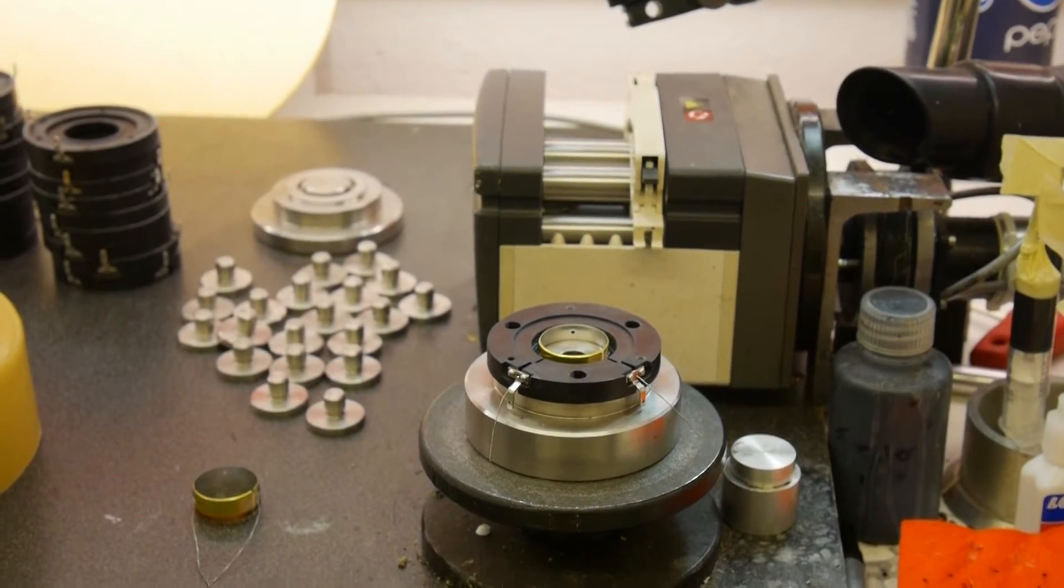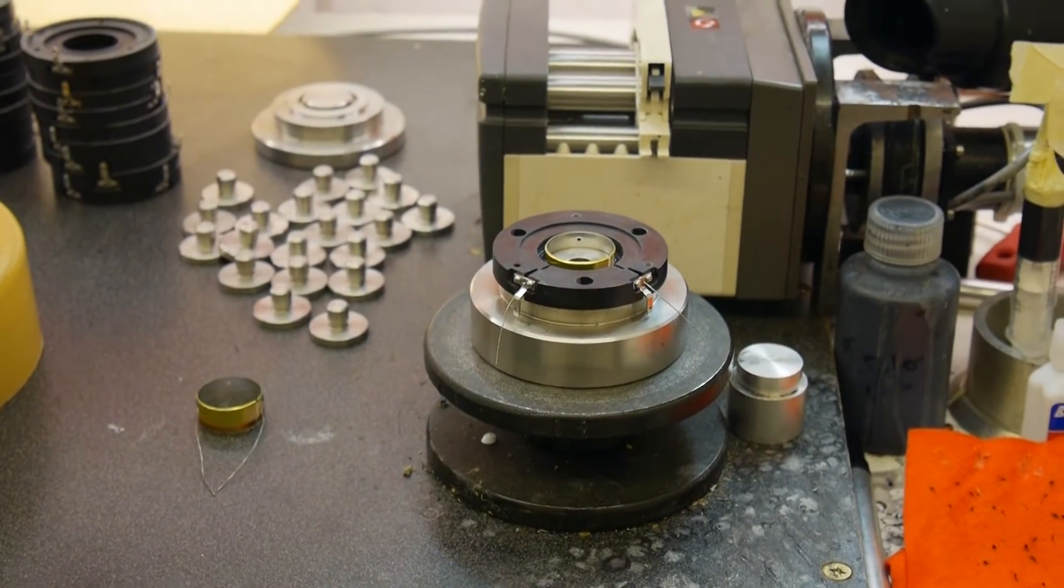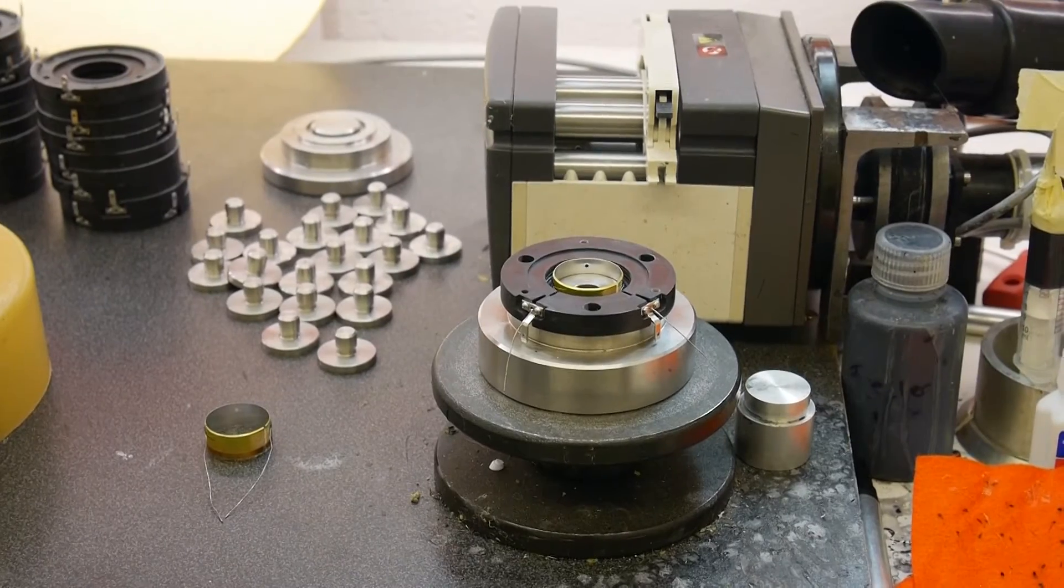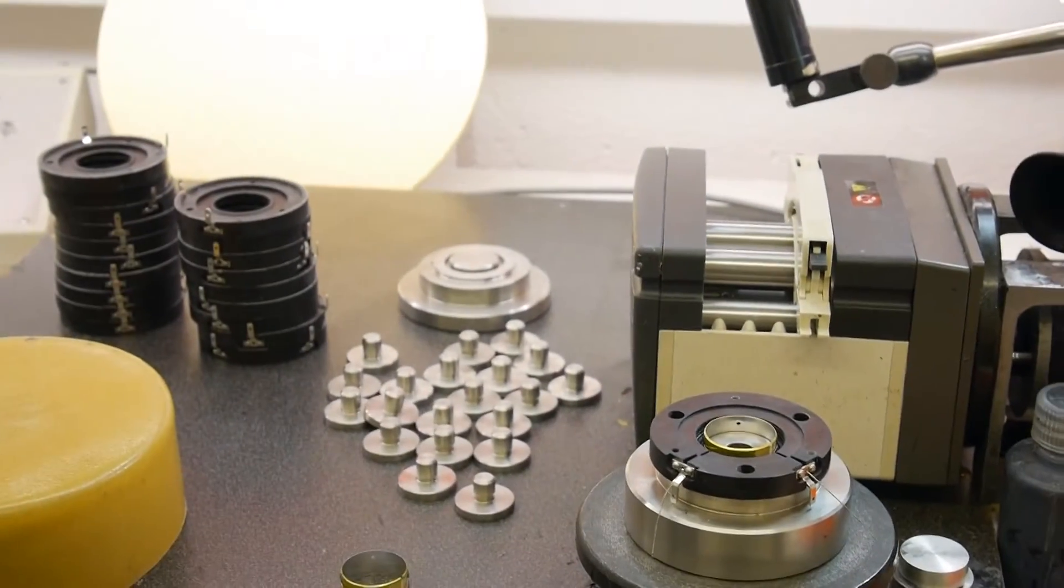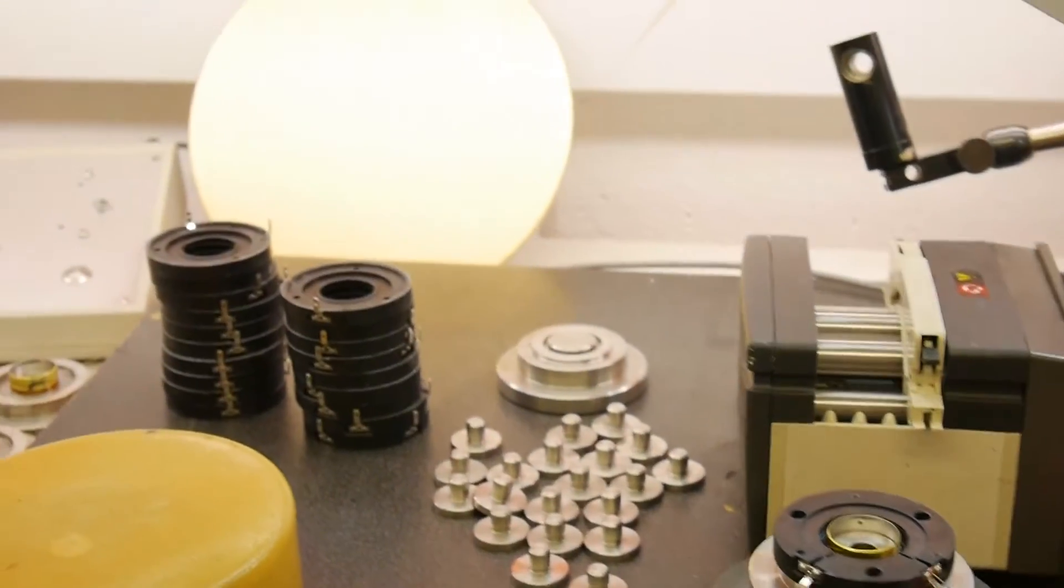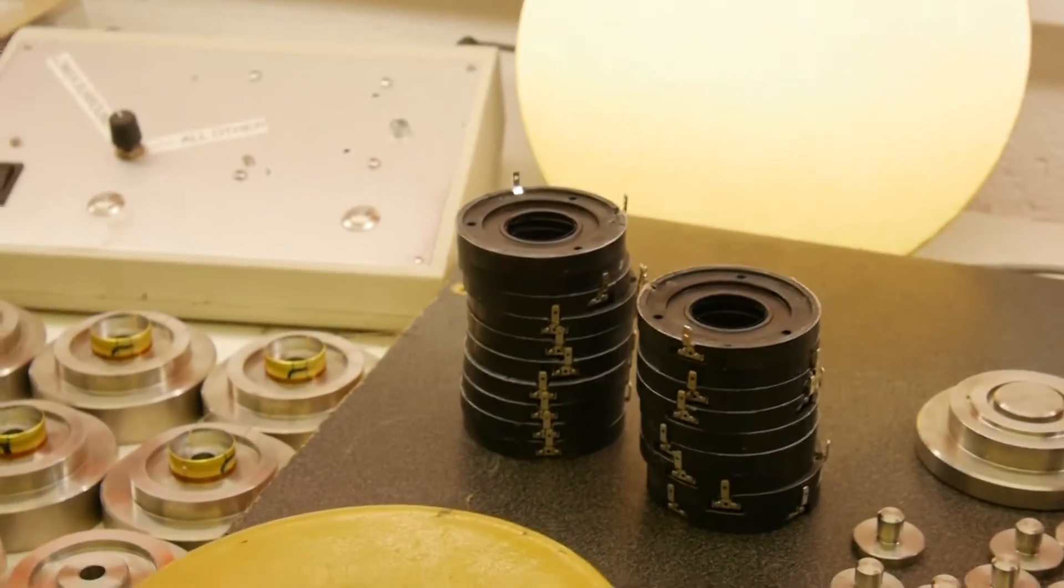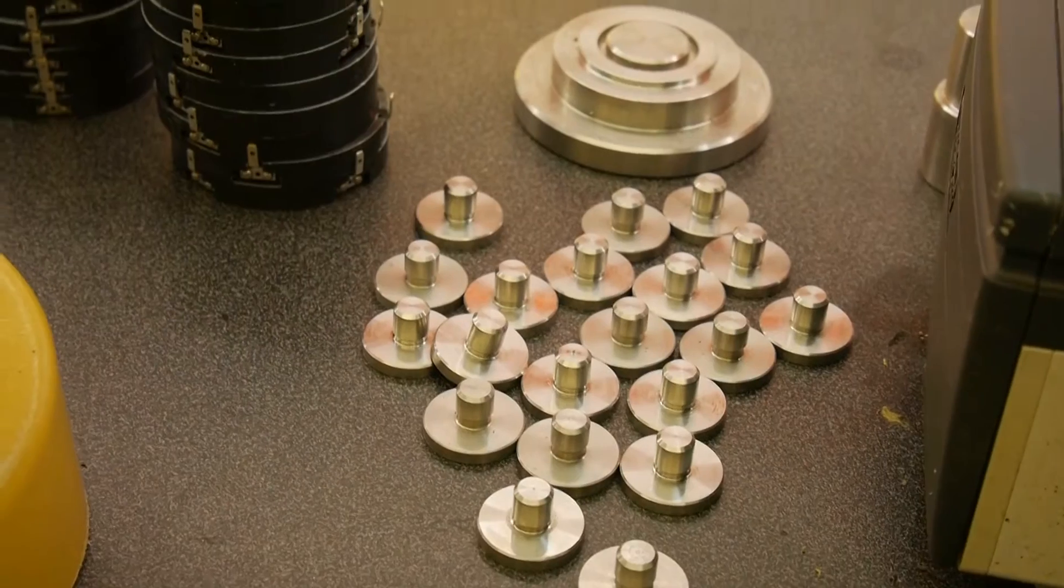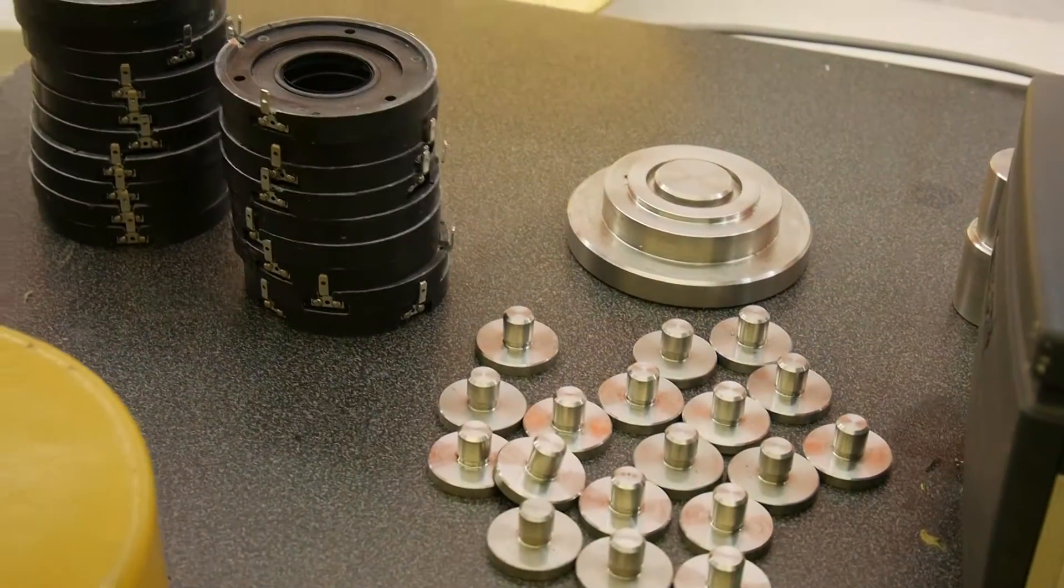We're actually producing two versions of the tweeter, a standard and a super, just like the mid-range dome. So we have a standard version with a smaller magnet system that we're using for the SCM7, SCM11, SCM19 and SCM40. And then a more powerful version, the S version, that will be used in the larger products.